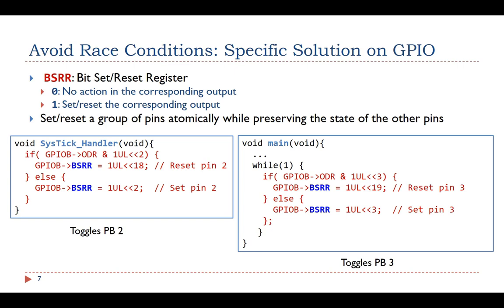First, let's look at a specific solution available for GPIO. On STM32, each GPIO port has a BSRR register, which stands for Bit Set Reset Register. Writing a bit to 0 in BSRR has no impact on the corresponding output. However, writing a bit to 1 in BSRR can set or reset the corresponding output.